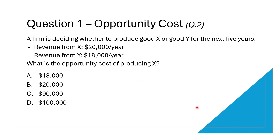Now this question is a bit tricky. Some might choose option A, but if you look carefully, it says the opportunity cost for the next five years. That means you have to calculate the total amount lost over five years, which would be $18,000 of good Y not being produced multiplied by five, which is actually $90,000. So the correct answer is $90,000.